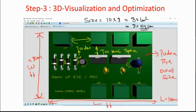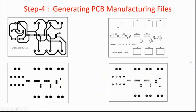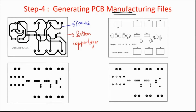In the fourth step we need to generate manufacturing files — files that help us manufacture the PCB. There are four important files. The first is the bottom copper layer, which contains all the tracks. That is the heart of your PCB.